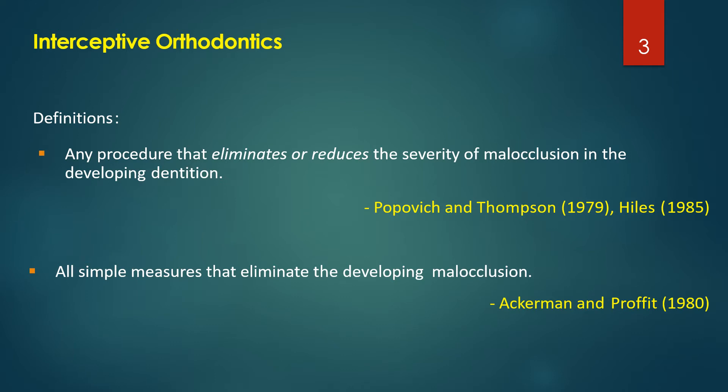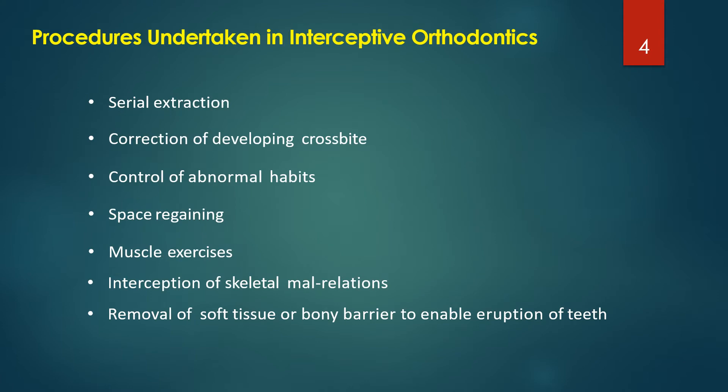Coming to interceptive orthodontics, the definition: it was Popovich and Thompson in 1979 who said that any procedure that eliminates or reduces the severity of malocclusion in the developing dentition is termed interceptive orthodontics. Akerman and Prophet in 1980 also said that all simple measures that eliminate the developing malocclusion is termed interceptive orthodontics.